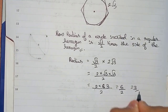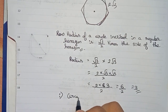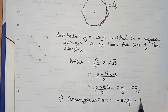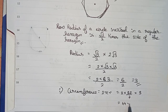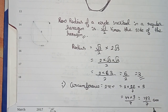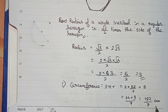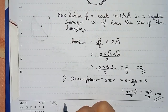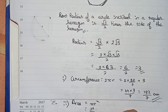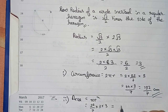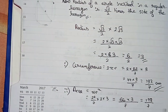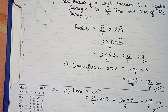From here we can easily find the circumference. Circumference equals 2 pi r, that is 2 into 22 by 7 into 3. So 2 into 22 is 44, multiplied by 3 by 7. 44 into 3 gives 132, so the circumference is 132 by 7 centimeters.